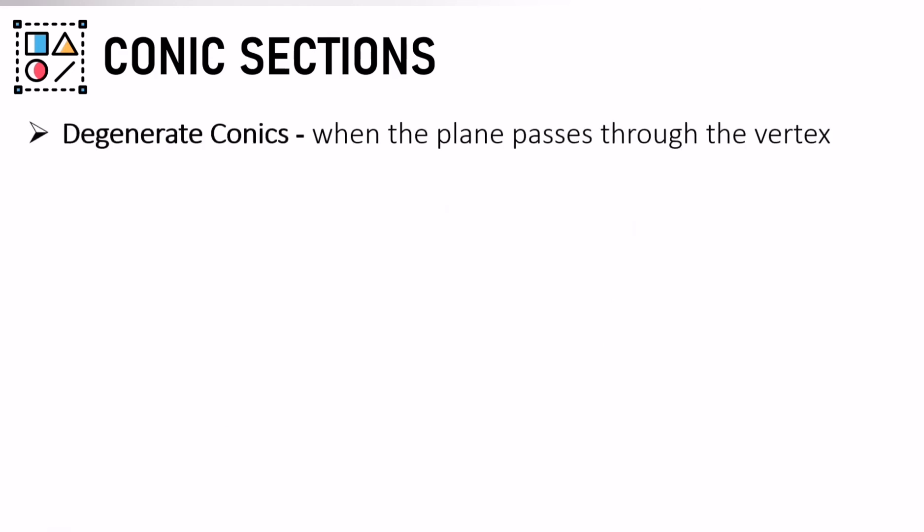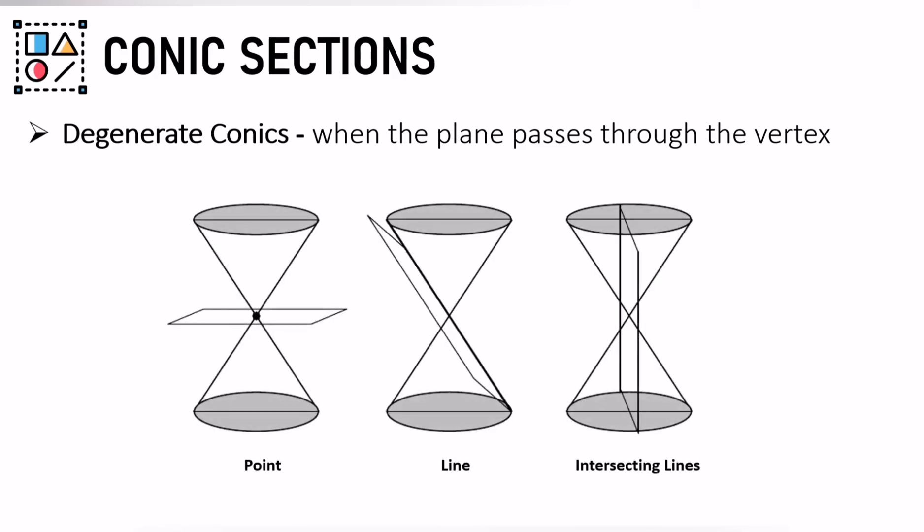We also have degenerate conics. It's when the plane passes through the vertex. So if the plane intersects at the vertex, then you have a point.